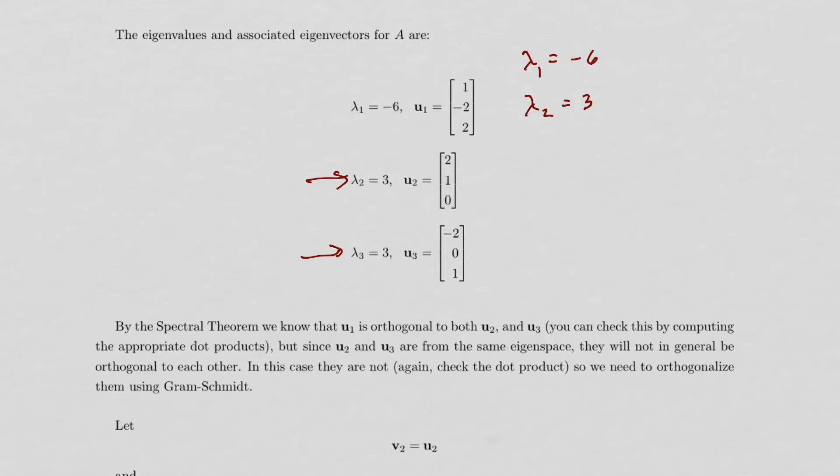And so n, in this case, is 3 because A is a 3 by 3 matrix. So I've just gone ahead and labeled them differently, lambda 2 and lambda 3, even though they're both 3. We could just say that there's one eigenvalue with multiplicity 2 here.